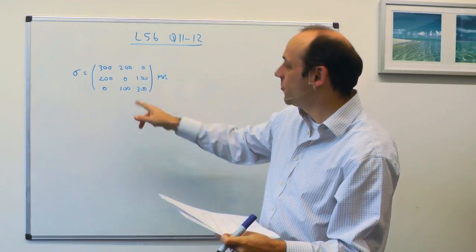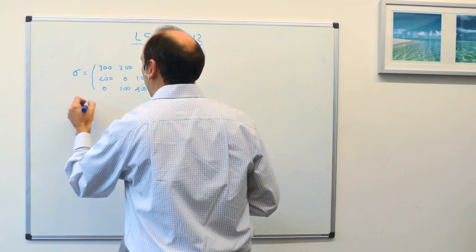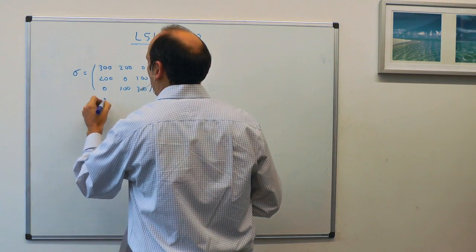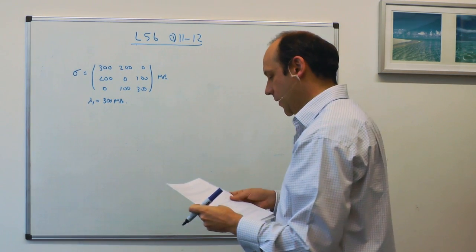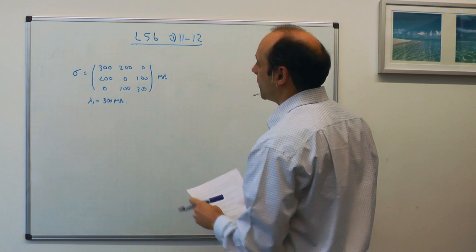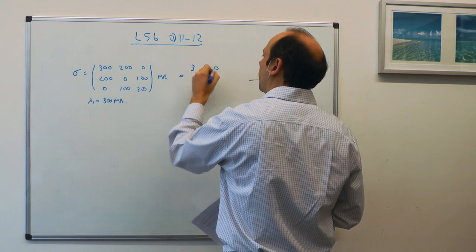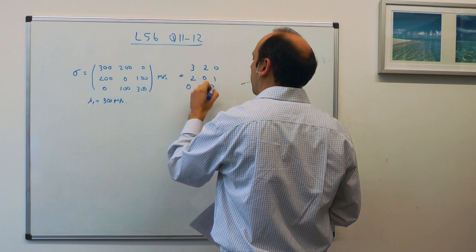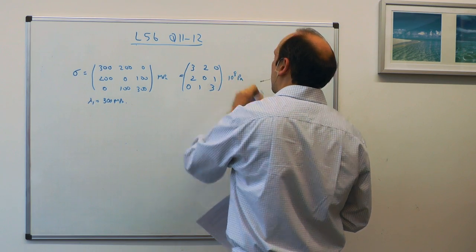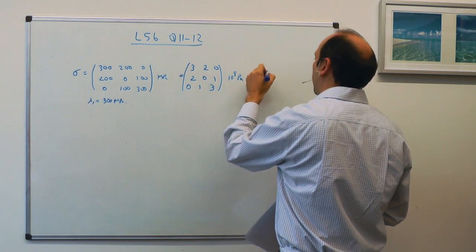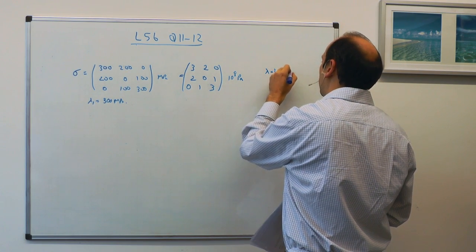We can move on to question 12. Question 12 asks us to find the principal stresses of this stress matrix, given that one of them is 300. The first thing I'm going to do is I'm going to divide by 100. So sigma is equal to 3, 2, 0, 2, 0, 1, 0, 1, 3, times 10 to the 8 Pascals, with lambda 1 equal to 3 times 10 to the 8 Pascals.